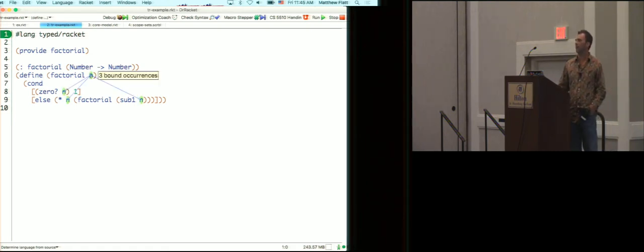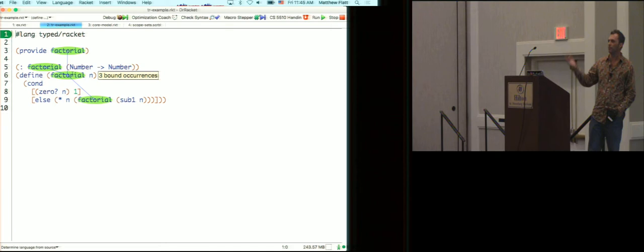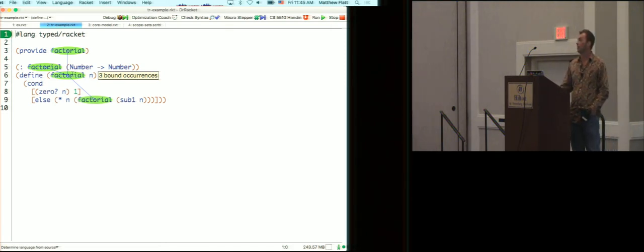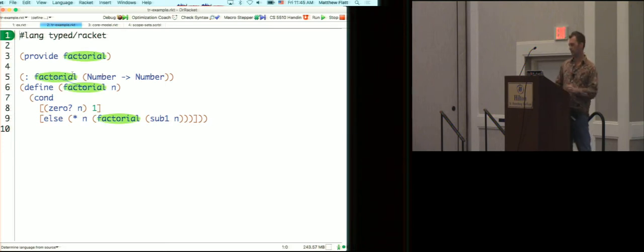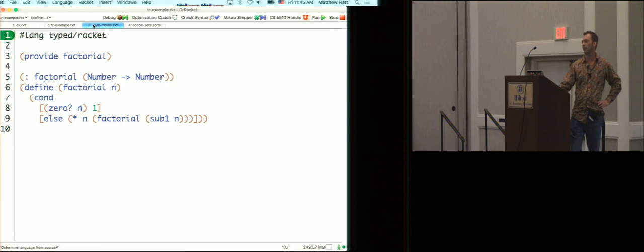Here's a typed Racket program. You don't expect anything different there. The argument can be shown to be bound by the formal argument. Even the type description, factorial, the programming environment can tell you that. As long as you can see the arrows, that's all that matters.